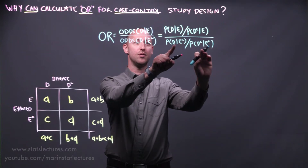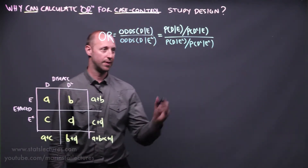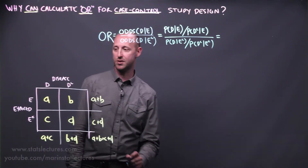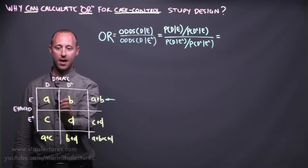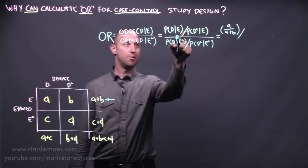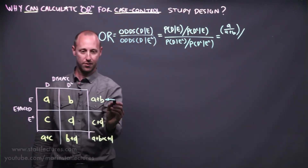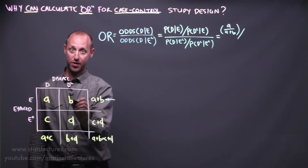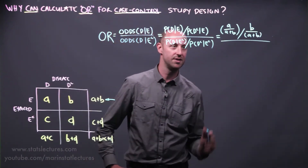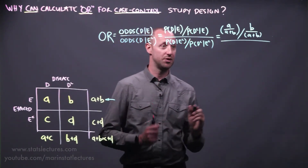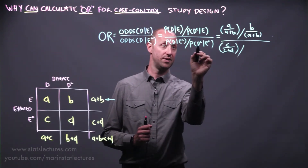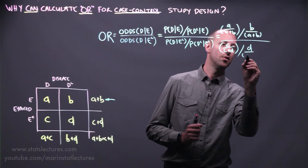The odds of having the disease given someone's not exposed is the probability of having the disease given they're not exposed divided by the probability of not having the disease given they're not exposed. Working these out numerically: the probability of disease given someone's exposed — conditioning on the exposed row — is A over A plus B. The probability of not having the disease given they're exposed is B over A plus B. The probability of having the disease given someone's not exposed is C over C plus D, and the probability of not having the disease given they're not exposed is D over C plus D.